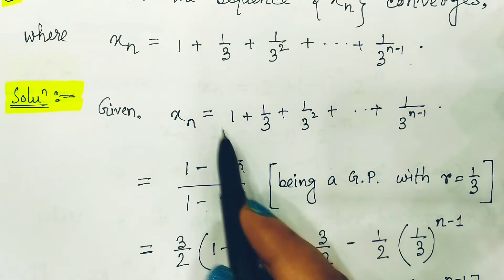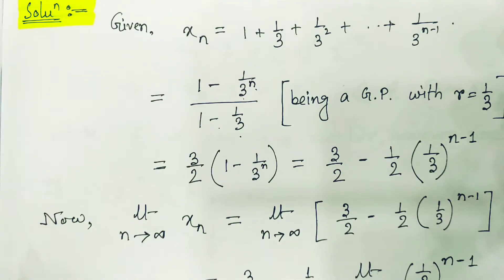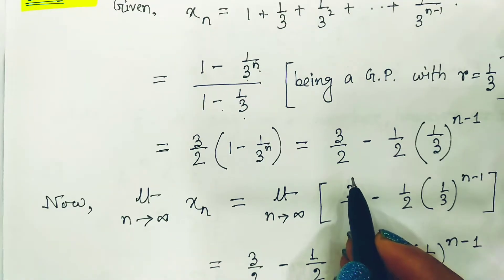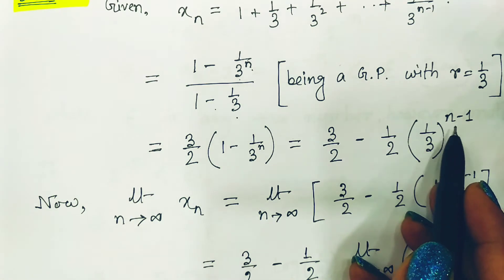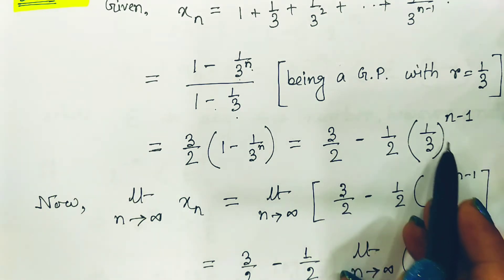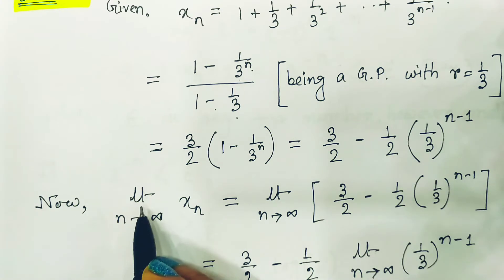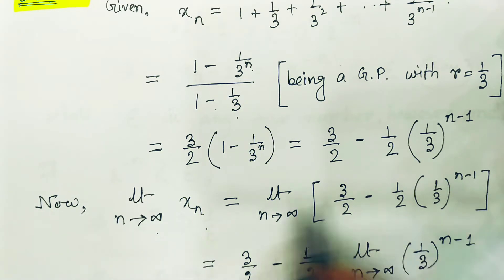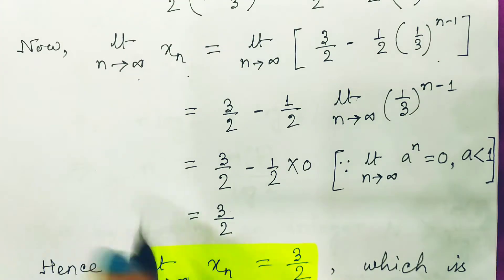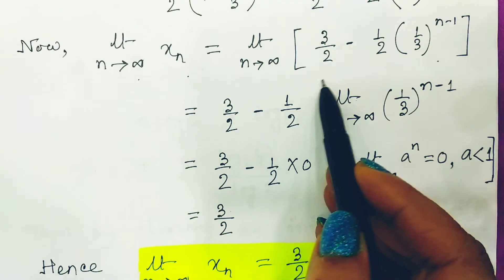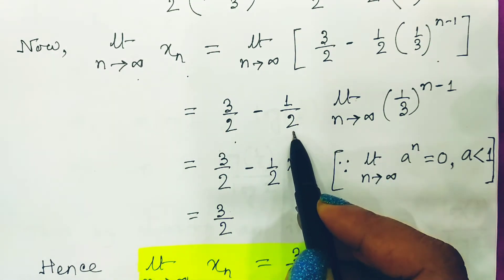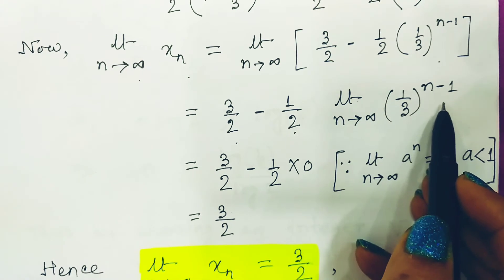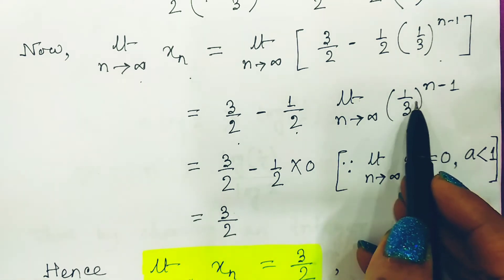Since the first term is 1, after simplification we find xn = 3/2 minus (1/2)·(1/3)^(n-1). Now taking the limit as n tends to infinity, the constant 3/2 stays, and we take out 1/2 with the limit applied only to the term involving n.